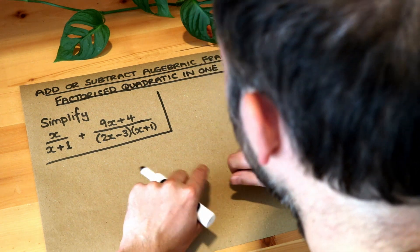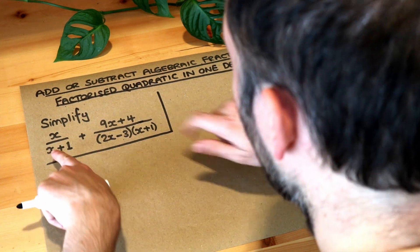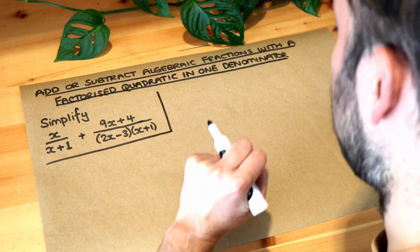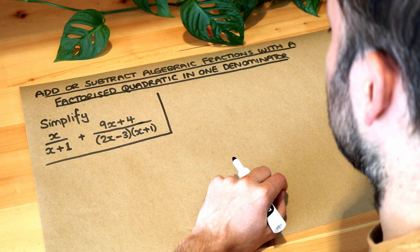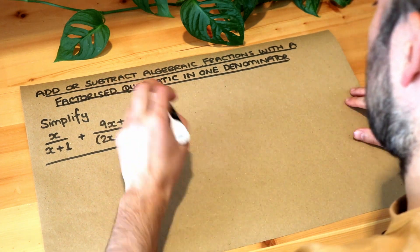Can you also notice that in these two different denominators we have the x plus 1 in common and if that happens then it makes it easier for us to add these algebraic fractions because remember what we'd usually do when we add fractions.